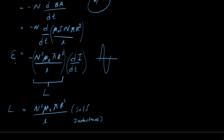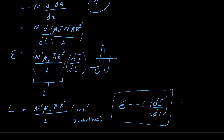Looking at the final equation, we have EMF = −L·dI/dt. We can replace L with the expression we found. This equation says that if we change the current running through the coil rapidly, we get a huge impulse of EMF proportional to the rate of change dI/dt. This is the EMF generated by the coil, and this is the self-inductance of the coil. See you next time.